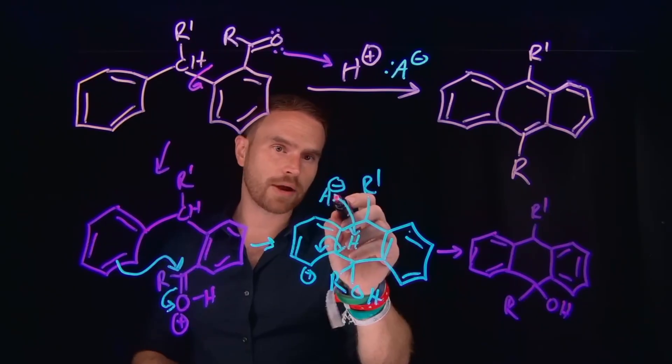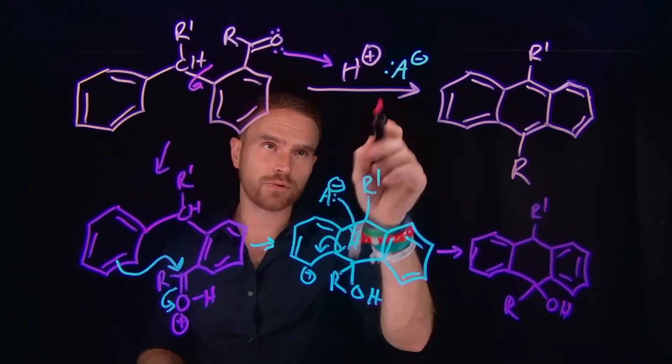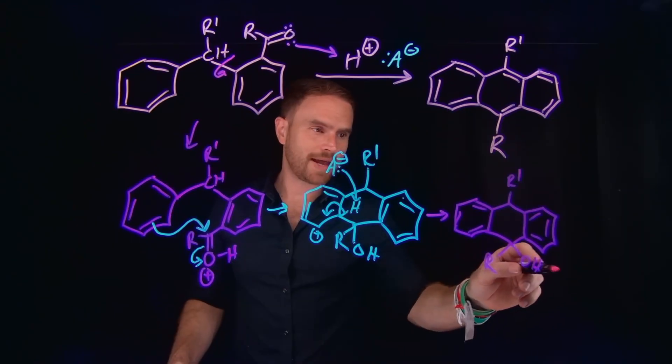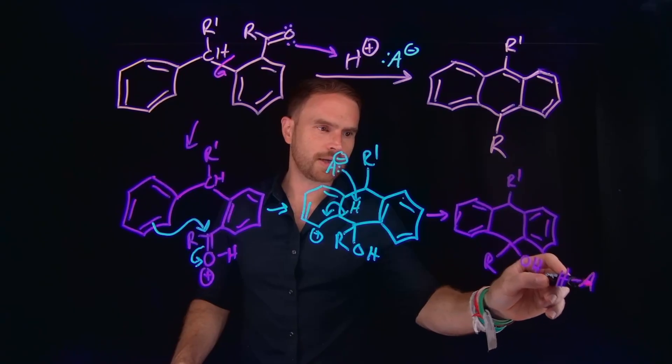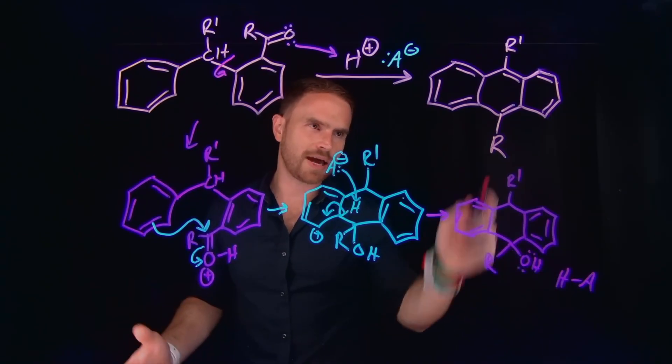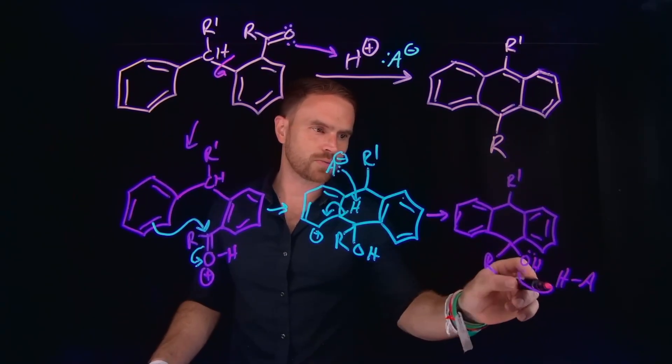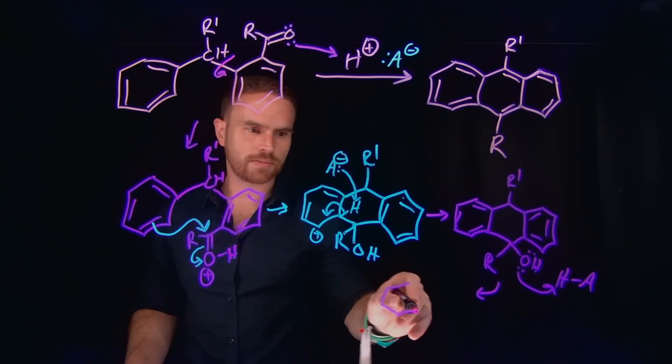And now we, remember, have regenerated our acid that we used initially. So what that means is that that acid can be used to protonate our alcohol, which is eventually how we get rid of it in our final product. So this will come and be protonated, which will generate our next intermediate.